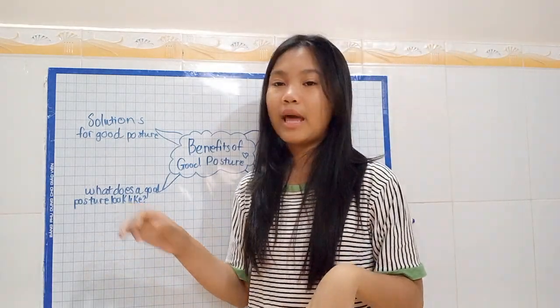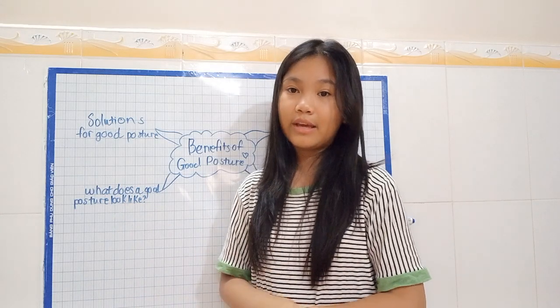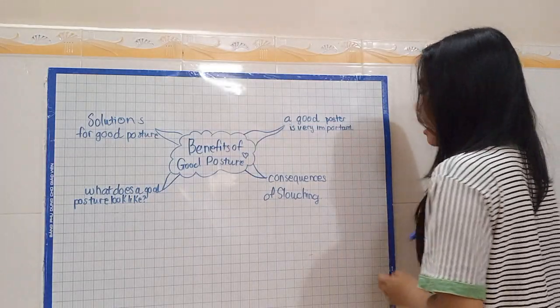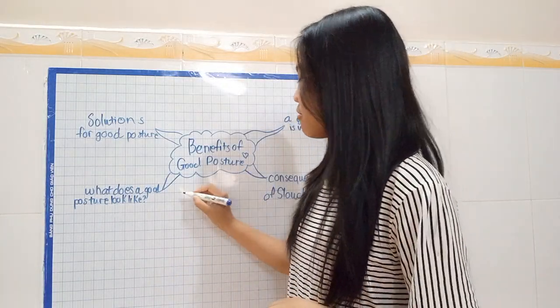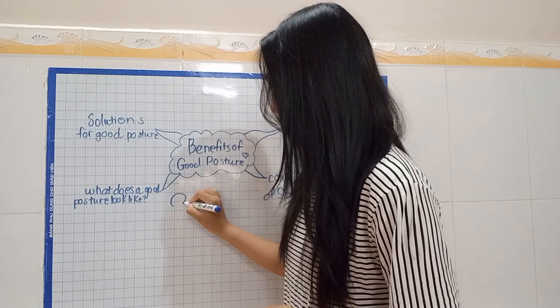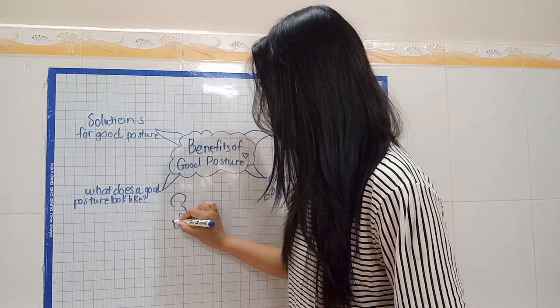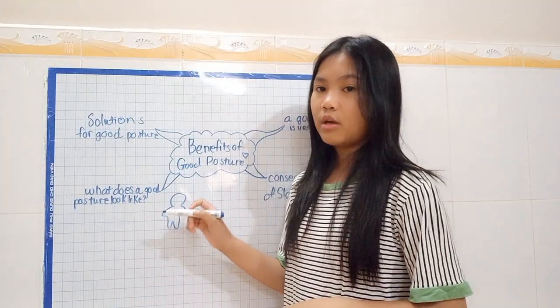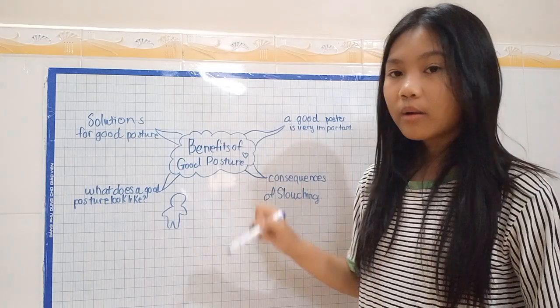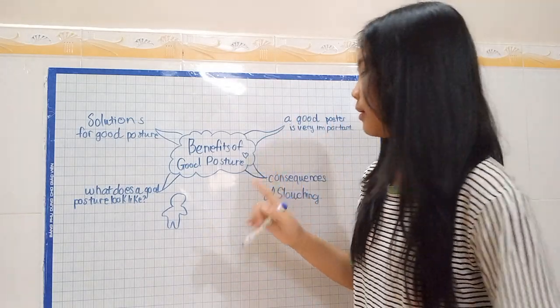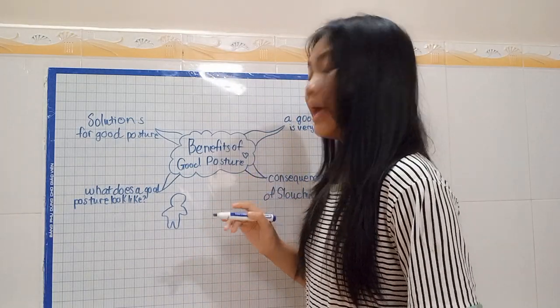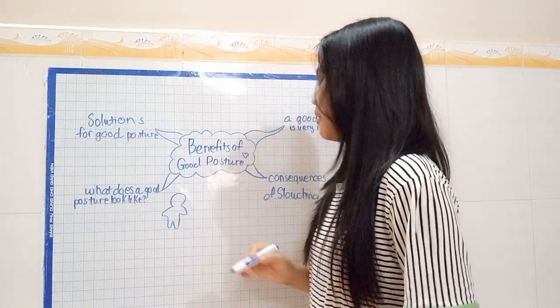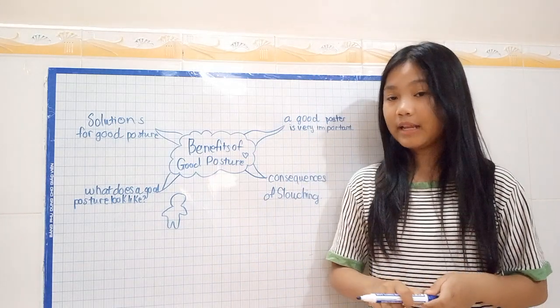And what does an actual good posture look like? When good posture is determined, I think that our body, our human body, should look completely straight. And all the bones should look aligned in one line.